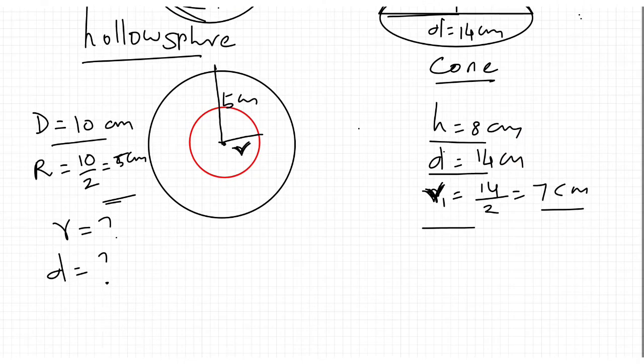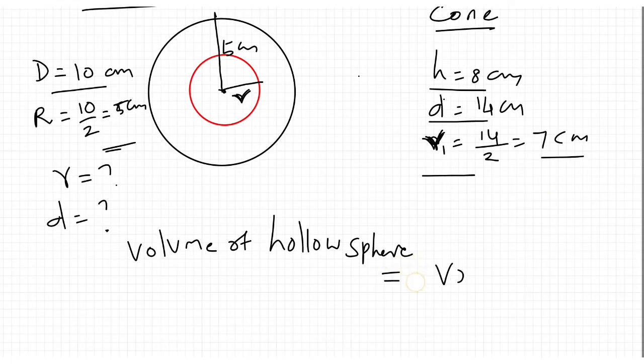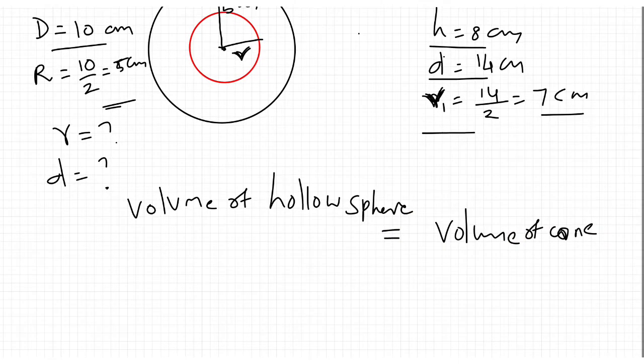Now, volume of hollow sphere equals volume of cone. Volume of hollow sphere: 4 by 3 pi R cube minus r cube, equals volume of cone: 1 by 3 pi r square h.